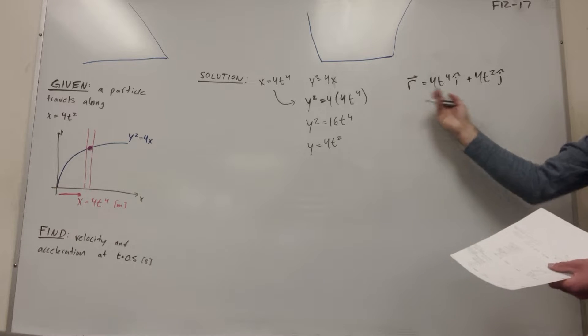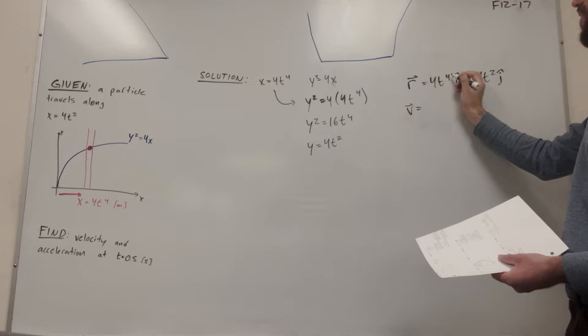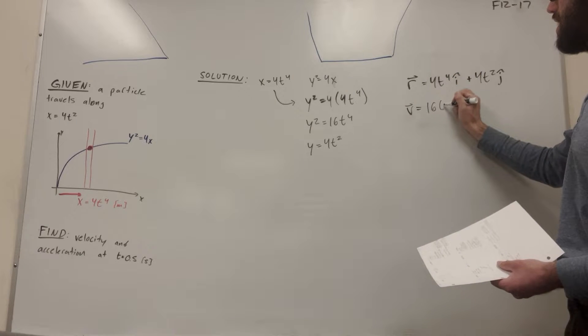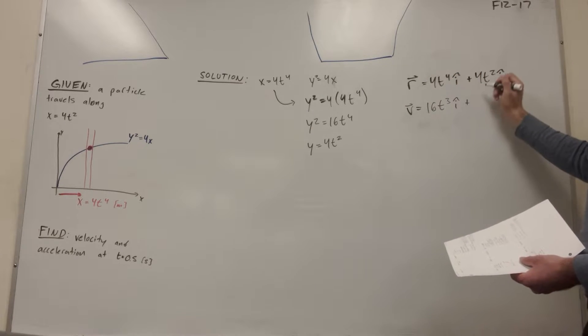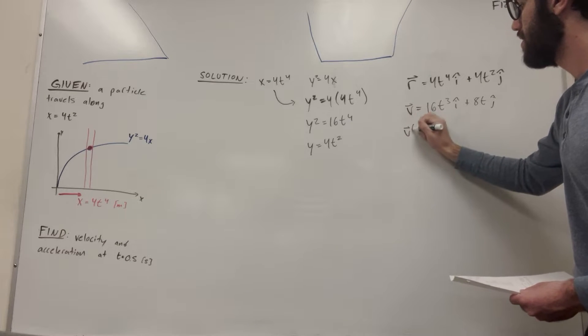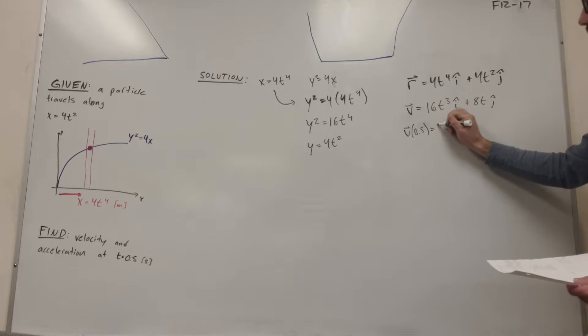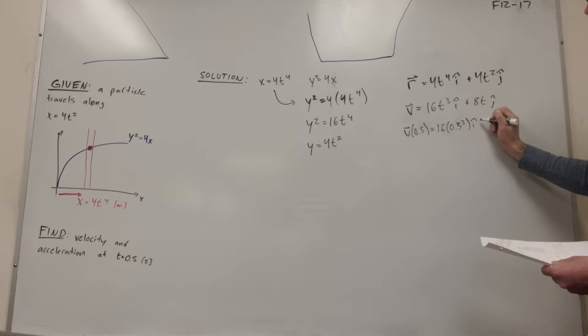So now if we want to find a velocity vector, all we have to do is take the derivative of this. We're taking the derivative of this. That 4 is going to come down, we're going to get 16t to the 3rd i plus 8t j. So now if we want to find a velocity at t equals 0.5 seconds, all we have to do is plug that in.